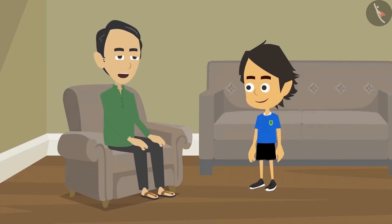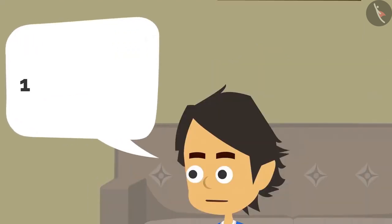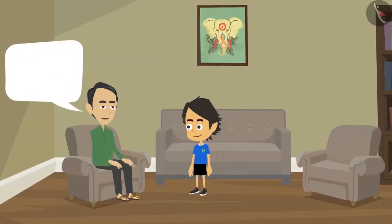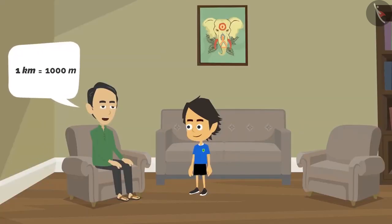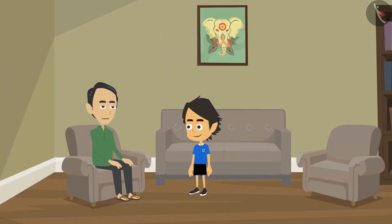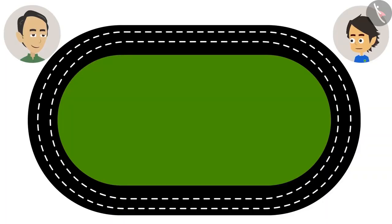How many centimeters are there in a meter? There are 100 centimeters in a meter. Similarly, there are 1000 meters in a kilometer. Then a thousand meters is a lot. Yes, much more than the meter. Our school sports competition had a 1000 meters race. So the people who participated in it ran one kilometer? Yes.